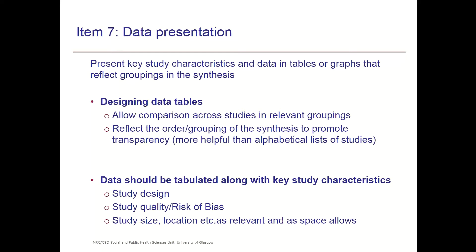The data that you have for each group should really be accompanied by key study characteristics that might affect interpretation of the data — for example, study design, risk of bias, maybe location if that's important and varies a lot across the studies. There's no precise prescription about exactly how you design your tables, but if you bear in mind these principles, you should end up with nice tables.